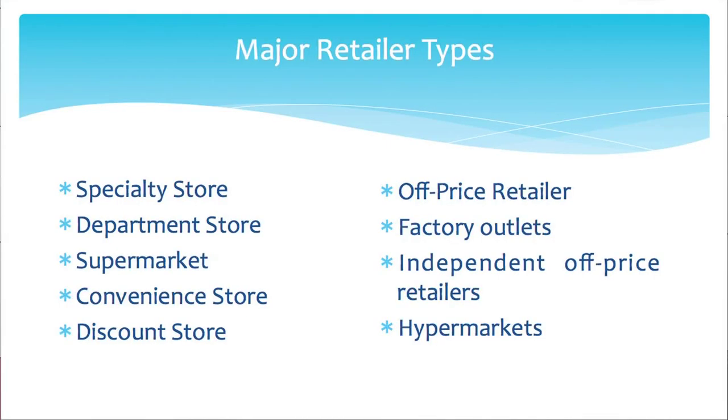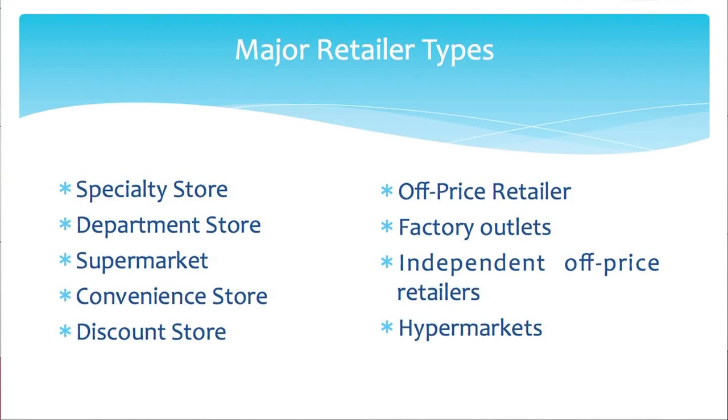Then comes the discount store. This kind of store has standard merchandise sold at lower prices with lower margins and higher volume, providing products at lower cost. Then the off-price retailer — here merchandise is bought at less than regular wholesale prices and sold at less than retail market price. These items are generally leftover or rejected goods, such as products rejected from export.